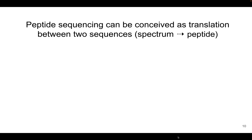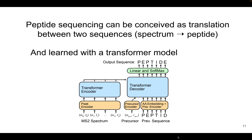We propose formulating de novo sequencing as a sequence-to-sequence learning problem, where on one hand we have mass spectra with its spectral peaks, and on the other hand a peptide as a sequence of amino acids. And once we formulate this as a sequence learning problem, we can use a transformer model to solve this by taking inspiration from other applications in computational biology, but also from natural language processing.